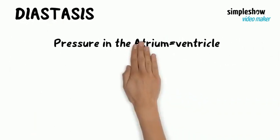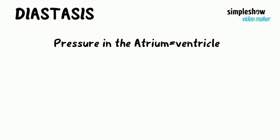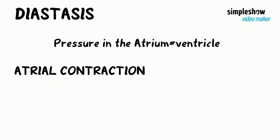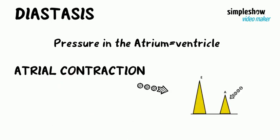At a particular point, the pressure in the ventricle will equalize, and the stage of diastasis begins. When diastasis ends, atrial contraction occurs, and this gives rise to an A-wave in the mitral inflow Doppler.